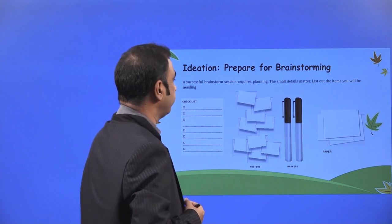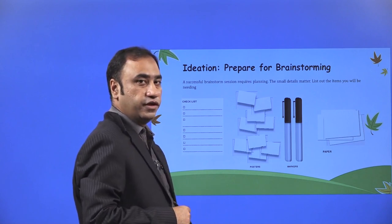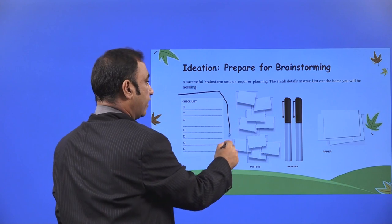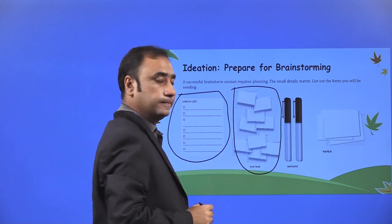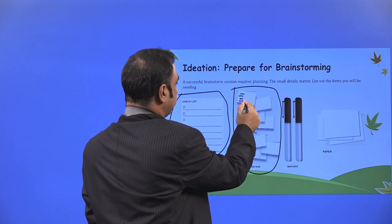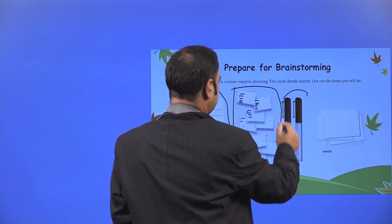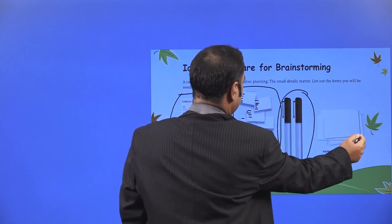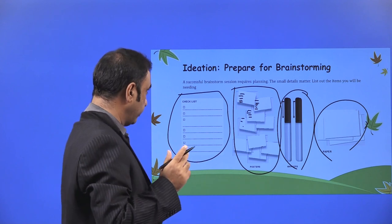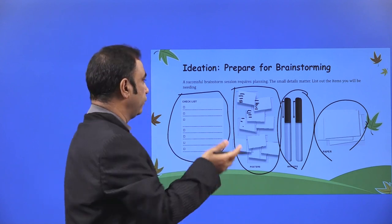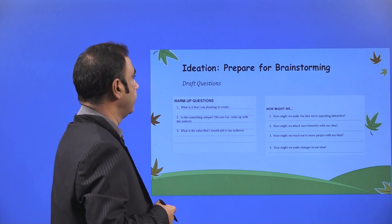Ideation: prepare for brainstorming. What is the brainstorming preparation process? A successful brainstorm session requires planning—the small details matter. List out the items you will be needing for brainstorming. You need a checklist. As per your own product, you need a checklist. Then you need posters. Every task will be listed like this. Sticky notes. You need markers. You need papers. To brainstorm, you need all those things so that you can record the entire brainstorming session. Whenever you are doing the brainstorming in the ideation process, make sure you get everything ready before the brainstorming session actually happens.